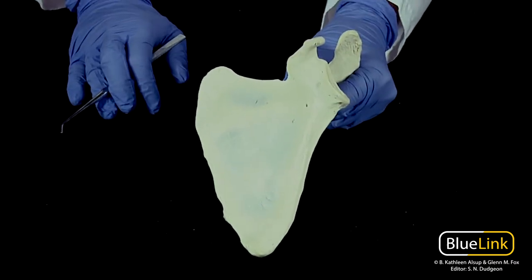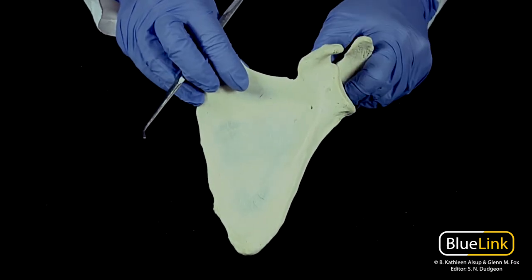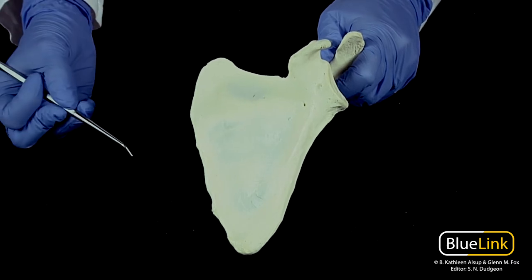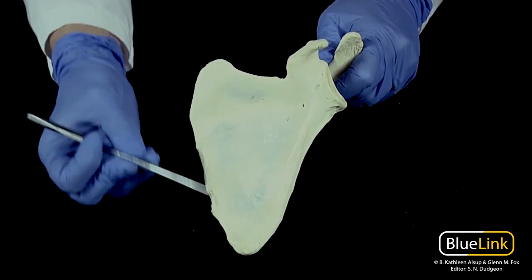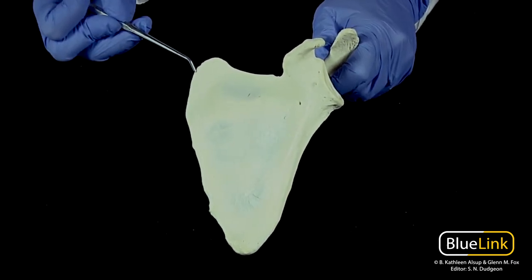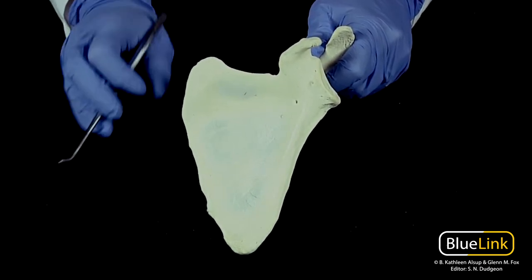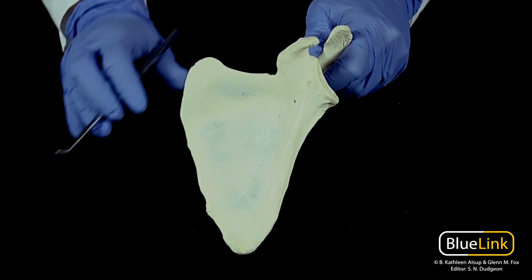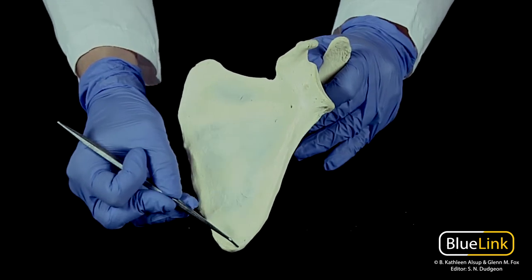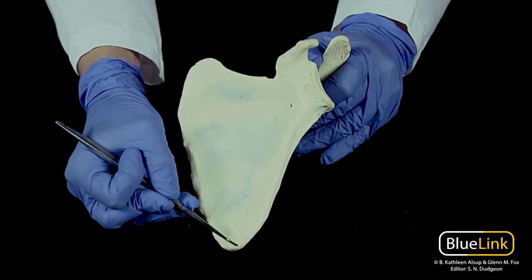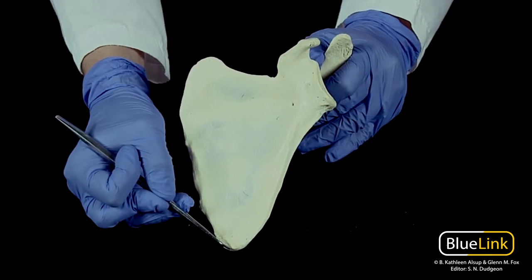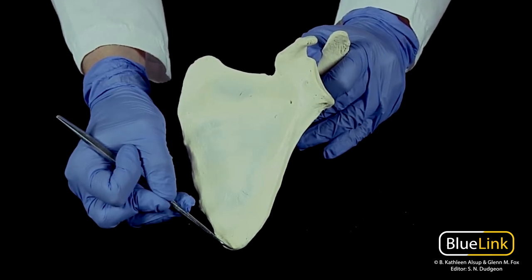Okay, now looking back at an anterior view of the scapula, we're going to talk about the two main angles. You're going to have the superior angle, which is going to be a site of insertion of the levator scapulae, and then the inferior angle, which is sometimes an origin site for the latissimus dorsi.